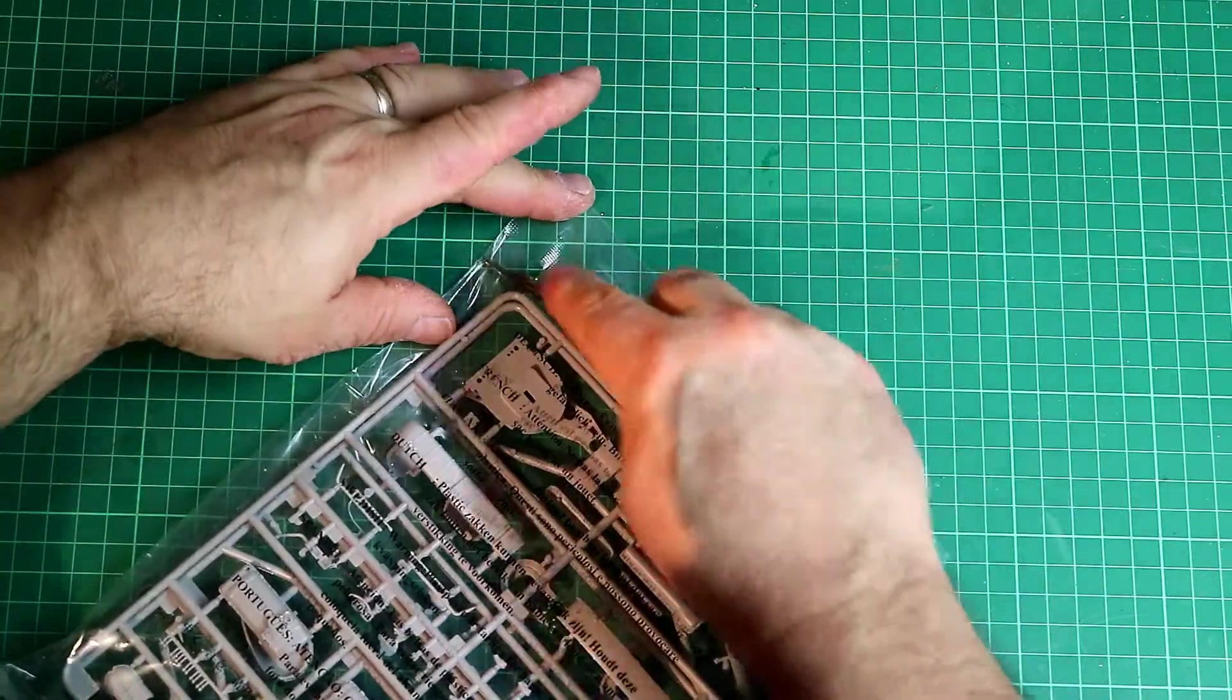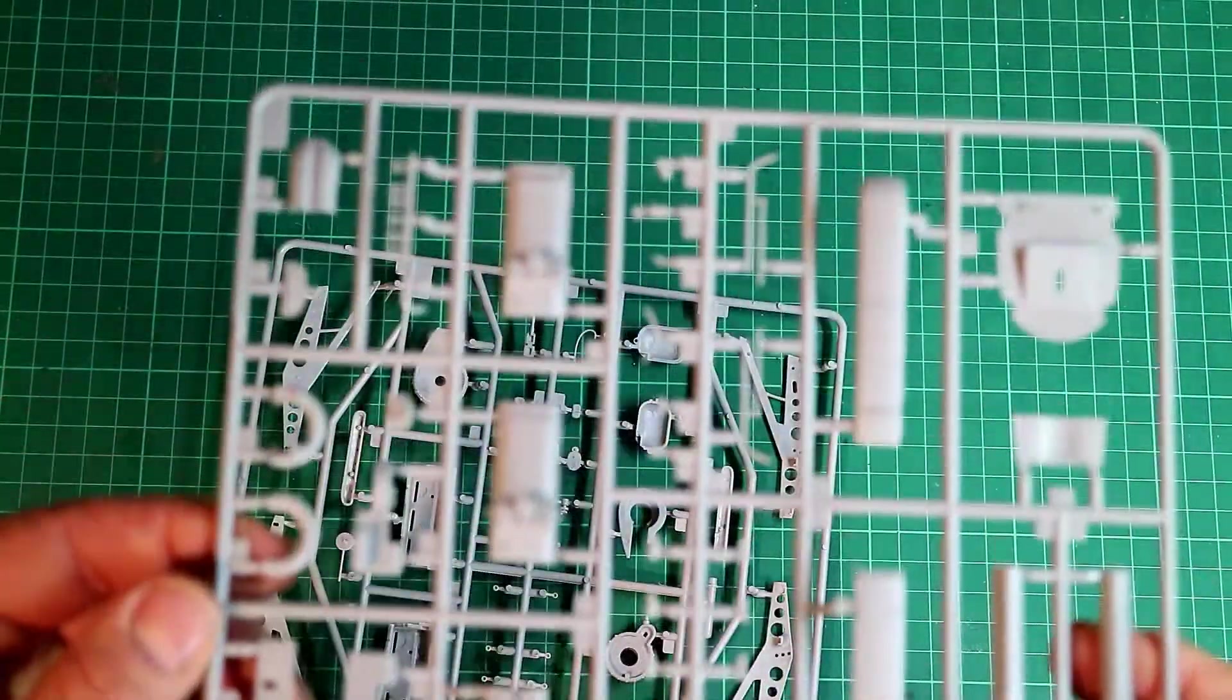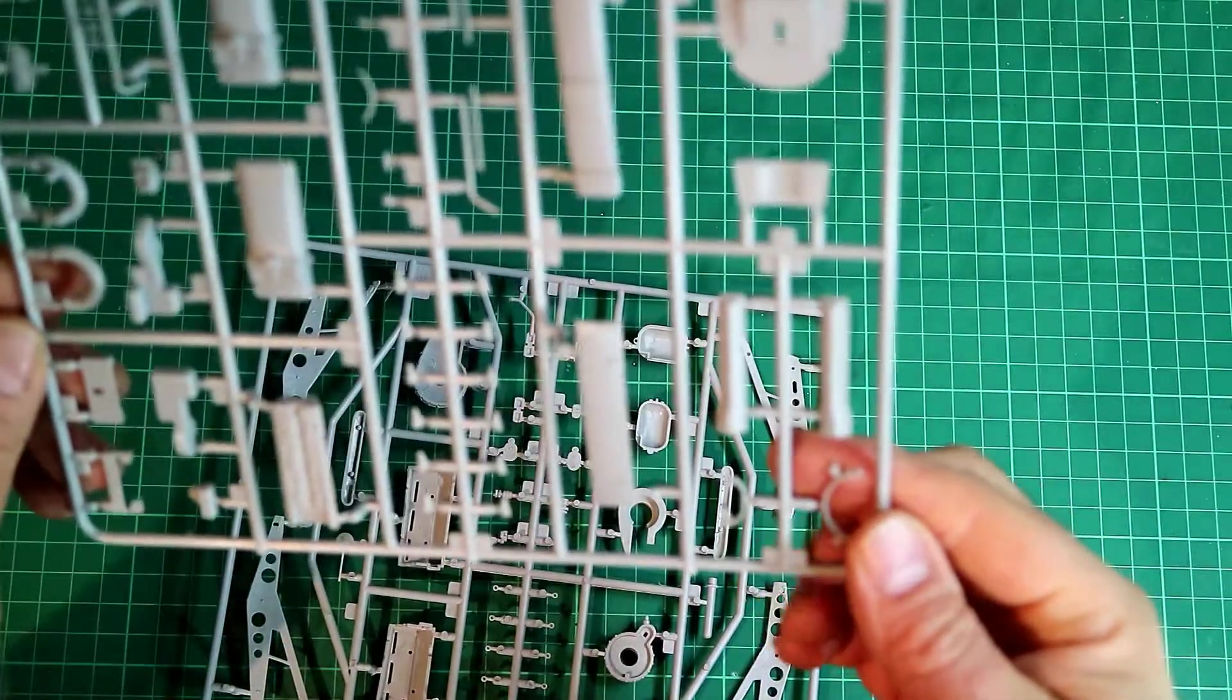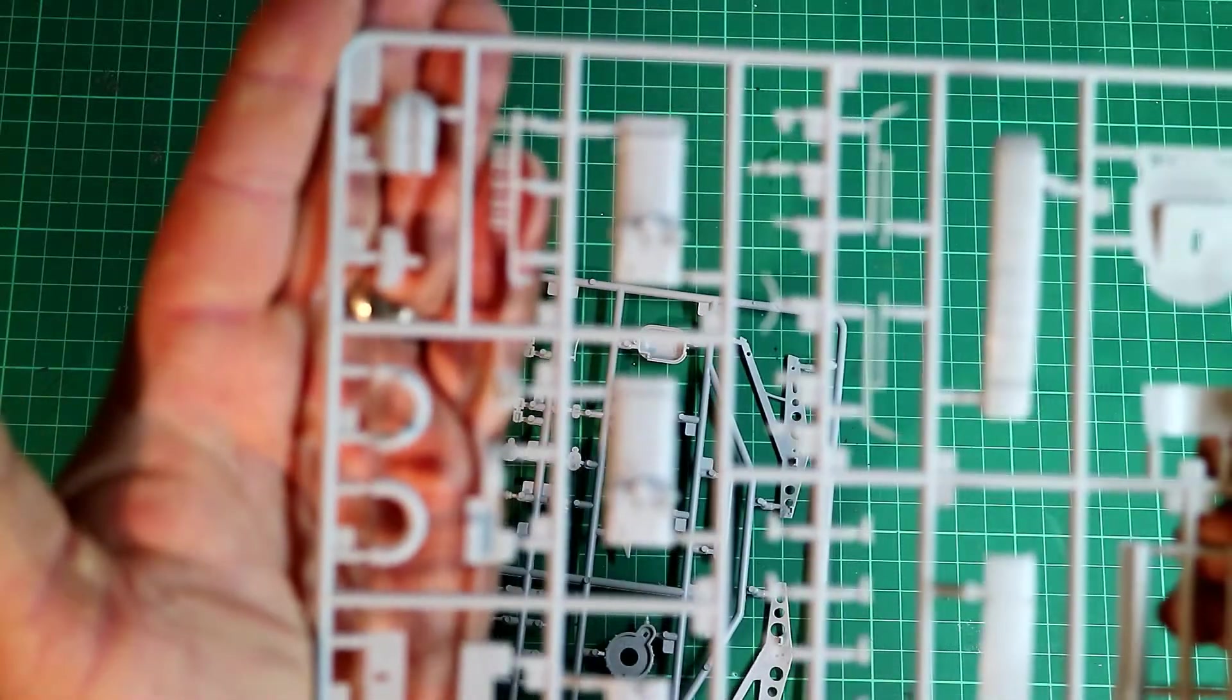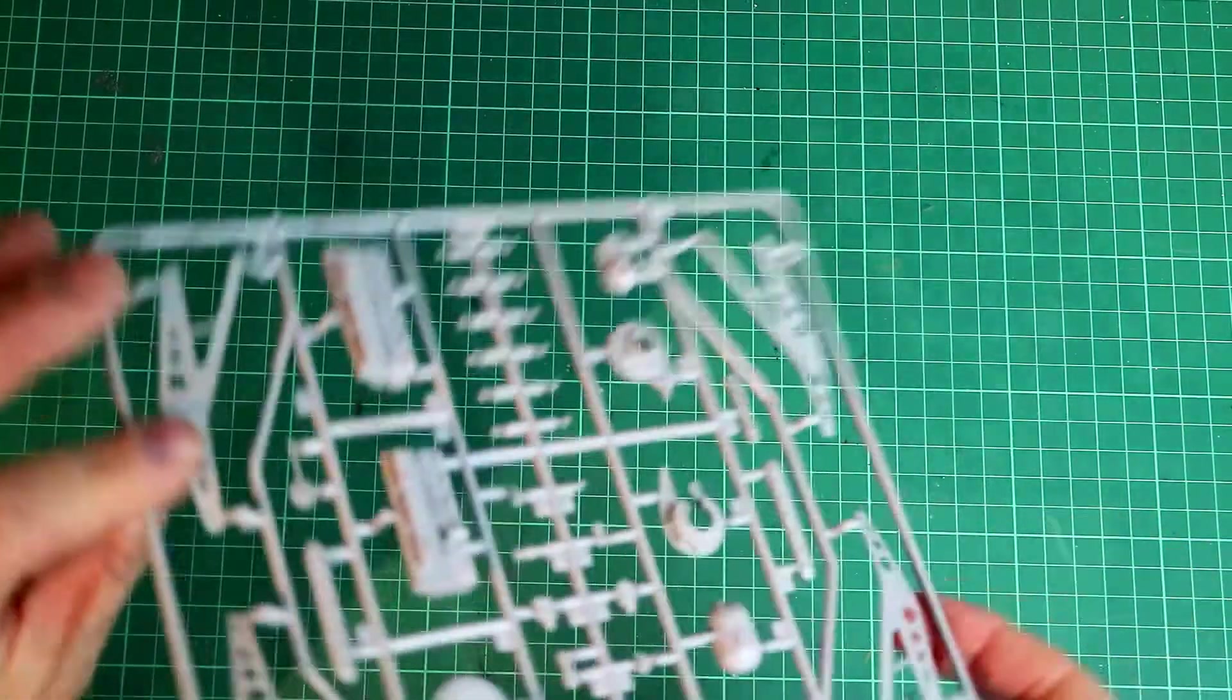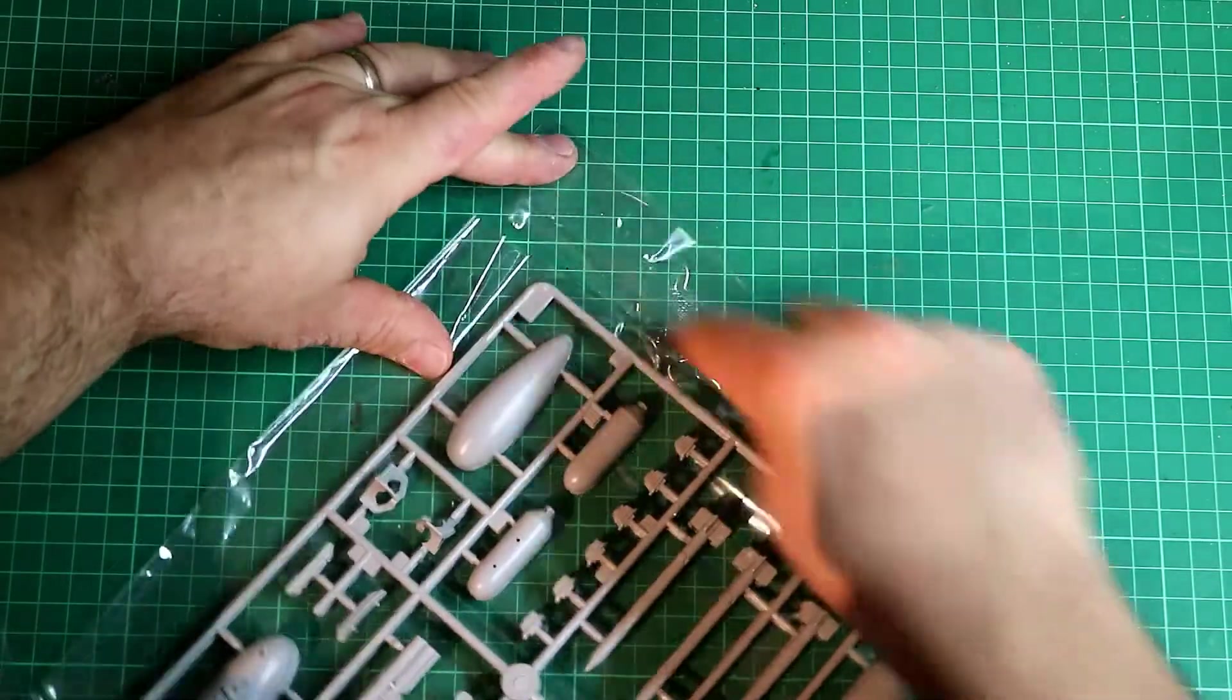Then we've got this main package here, which looks like it consists of pretty much all engine parts again. Nicely detailed here. Nicely detailed looking engine components. Again, pretty much flash free. Doesn't want to focus here, there we go. That looks pretty good. More engine parts here. Again, all clean, all good looking parts actually. No complaints there. Well, there's actually quite a lot of sprues for this kit.